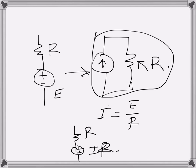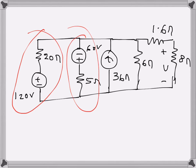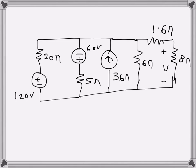Sometimes this technique is very helpful for circuit solving — we just need to identify where it applies. Here is a circuit, and we have to use source conversion to solve it. There are some parallel branches, and we have two voltage sources each with a series resistance. What we want to find is the voltage drop V across the 8-ohm resistance.